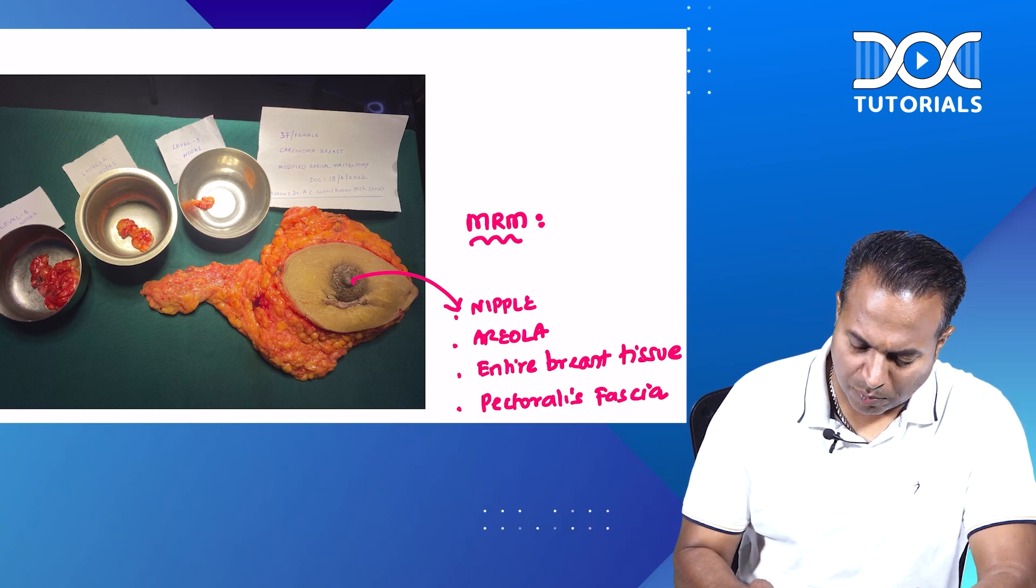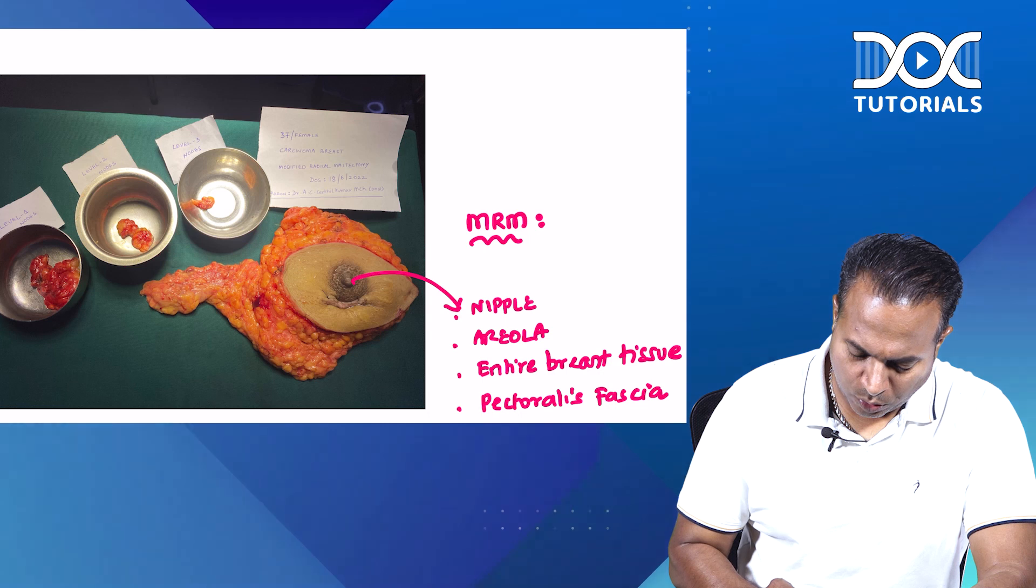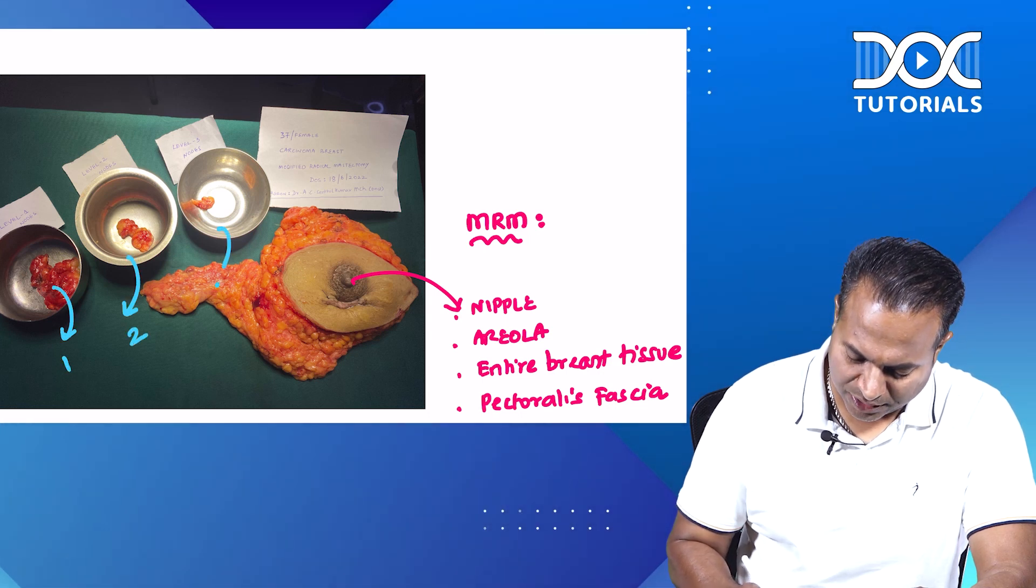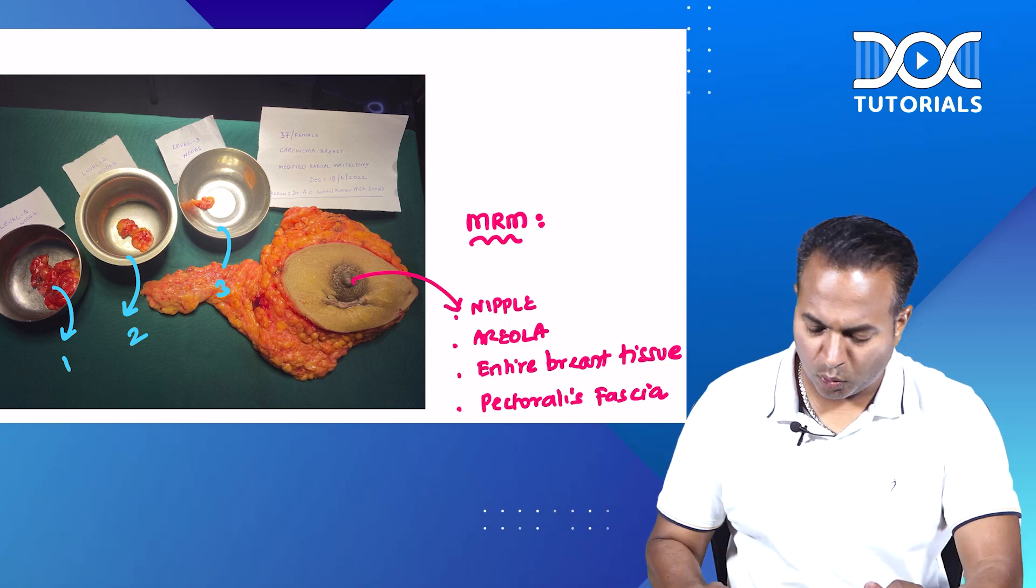Along with that, you can see in small boxes, we have put some nodes. These are all the nodes. This is level one node, this is level two node, this is level three nodes. So we have three levels of nodes being removed.